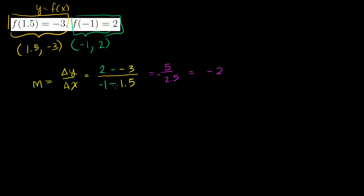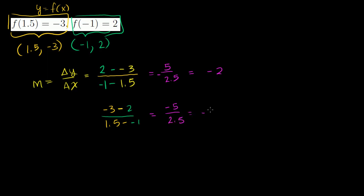Just to show it doesn't matter which order: using (1.5, -3) first gives -3 - 2 over 1.5 - (-1), which is -5 over 2.5, also equal to -2. As long as you're consistent — if this is the starting y, this must be the starting x — you get the same answer. The slope is -2.